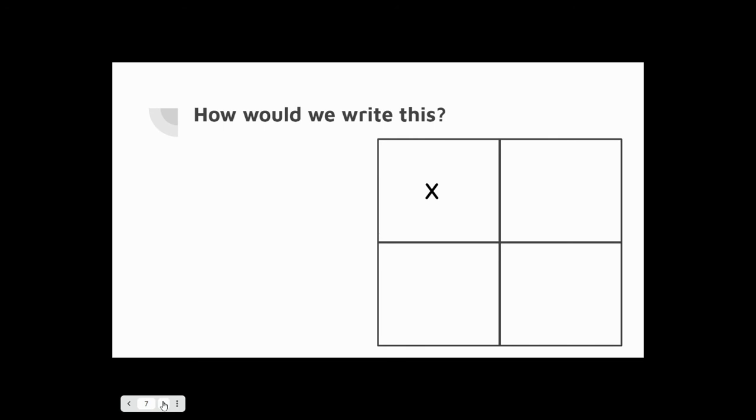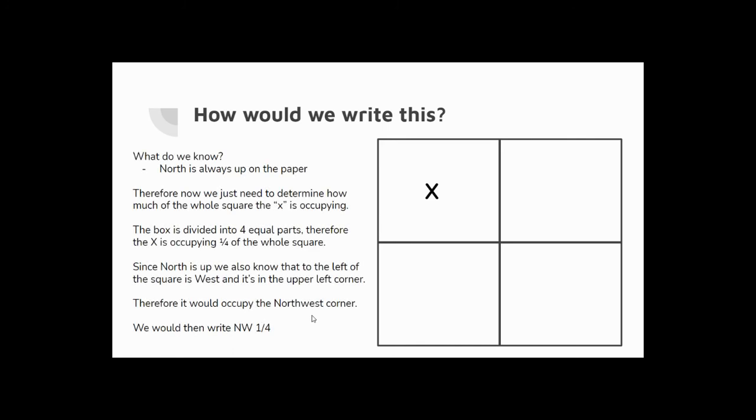So back to our example from earlier. We determined that this X occupies 160 acres, right? Because it's exactly one quarter of 640. But how do we write that? How do I know this 160 acres is what I'm looking at or going to buy? That's how we start writing it. So we look at the fact that we know that north is always up, right? North is always pointing up on the paper. And so therefore, we now just need to determine how much of the whole square the X is occupying in terms of cardinal directions, that north, south, east, and west. So since the box is divided into four equal parts, the X is now occupying one-fourth of the whole square. Since north is always up, we know that to the left of this center line, right?